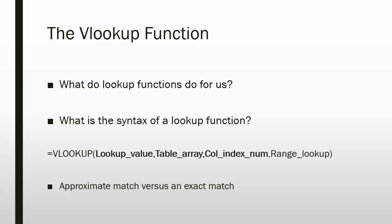What is the syntax of a lookup function? The VLOOKUP uses four arguments: equals VLOOKUP, open parenthesis, the lookup value followed by a comma, table array followed by a comma, the column index number argument followed by a comma, and last, the range lookup argument, followed by a closing parenthesis.